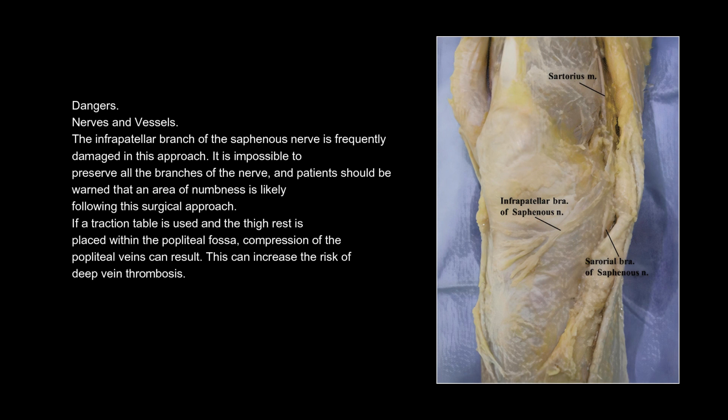Dangers — nerves and vessels: the infrapatellar branch of the saphenous nerve is frequently damaged in this approach. It is impossible to preserve all the branches of the nerve, and patients should be warned that an area of numbness is likely following this surgical approach. If a traction table is used and the thigh rest is placed within the popliteal fossa, compression of the popliteal veins can result, increasing the risk of deep vein thrombosis.